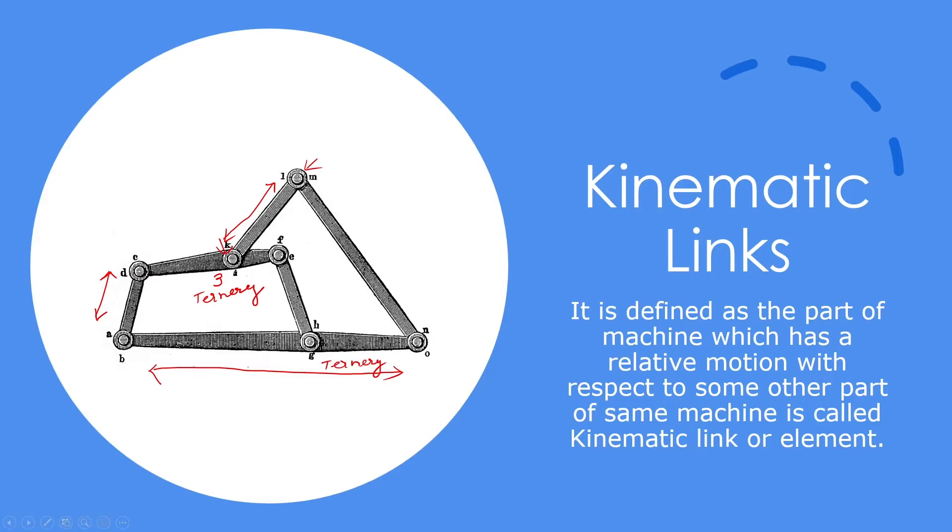Now let's understand the different types of links. I hope that the definition of link is clear to you. The links are very basic units of any mechanism or machine which is used to transmit power as well as force. The kinematic links have relative motion with respect to some other part of the same machine.